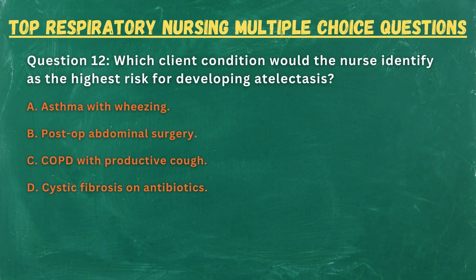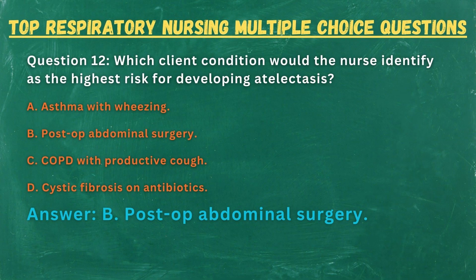Question 12. Which client condition would the nurse identify as the highest risk for developing atelectasis? A. Asthma with wheezing. B. Post-op abdominal surgery. C. COPD with productive cough. D. Cystic fibrosis on antibiotics. Answer: B. Post-op abdominal surgery.